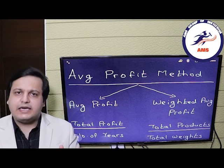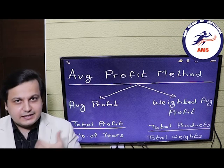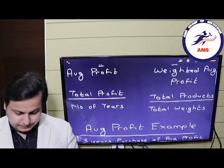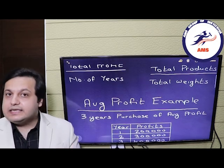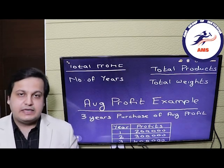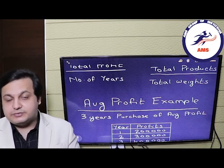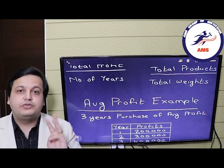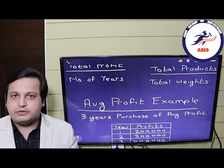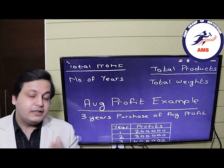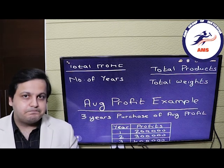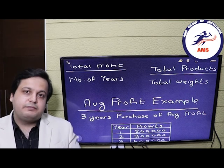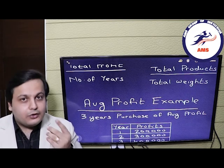Don't worry about the weighted average formula — you will study it further. So let's move on. We will take an example for average profits. In this question, you are given the profits of 5 years, plus they have given you 3 years purchase of the average profits, so you have to calculate the goodwill. We will start by totaling all the profits.